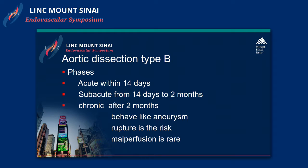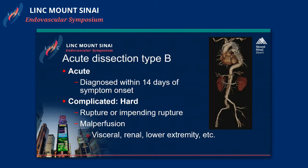Type B aortic dissections are broken down by the time range they are evaluated. Acute dissections are within the first 14 days — this is where we can see malperfusion and possible degeneration to rupture if blood pressure is not controlled. Subacute is 14 days to 2 months, and chronic is after 2 months. Chronic dissections behave more like aneurysms with a risk of rupture, while malperfusion is rare at that point.